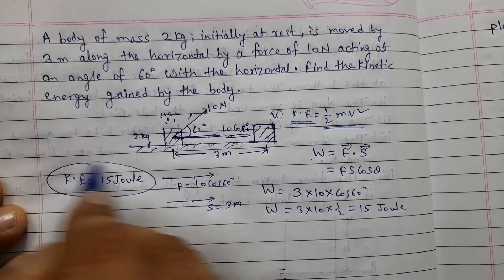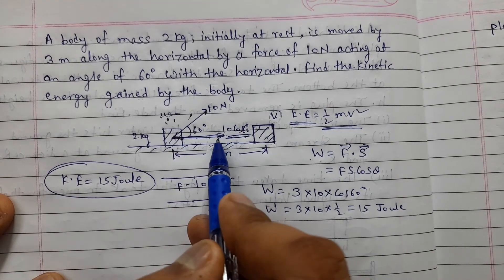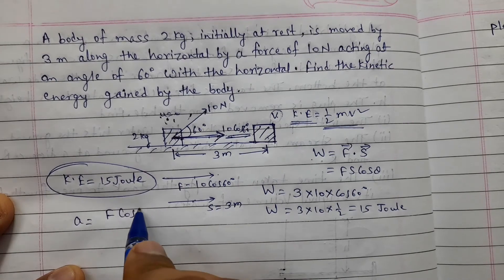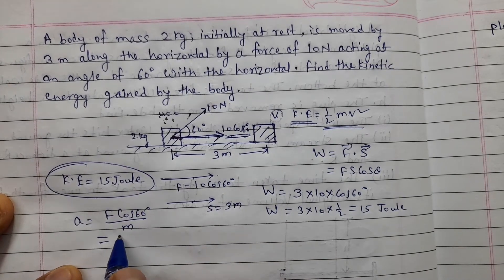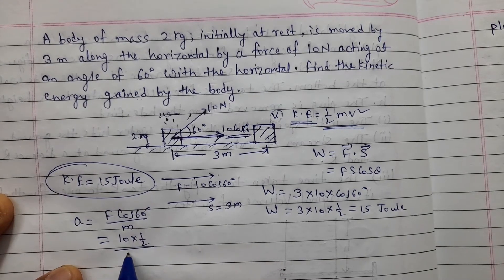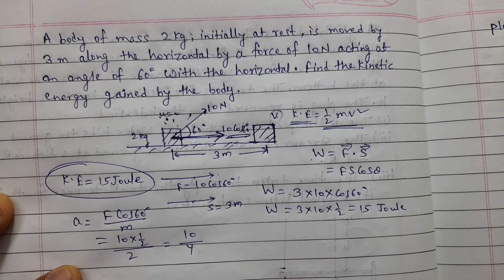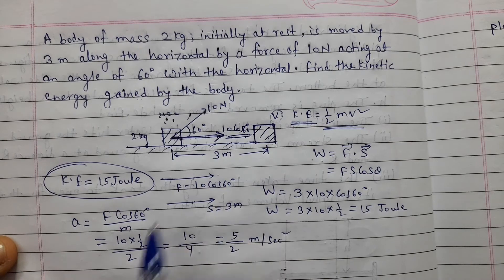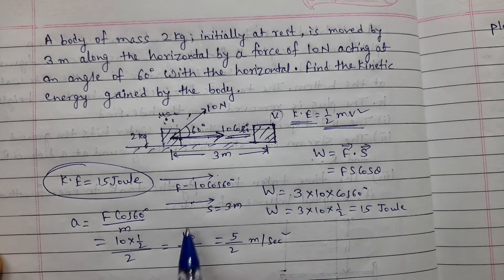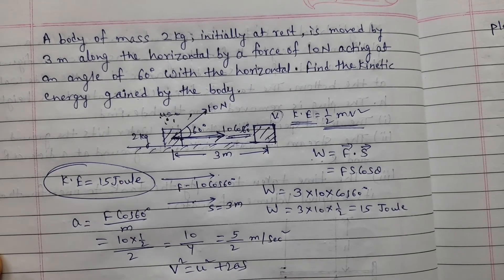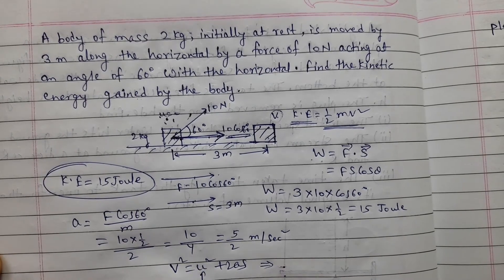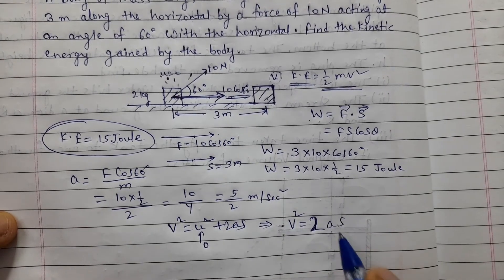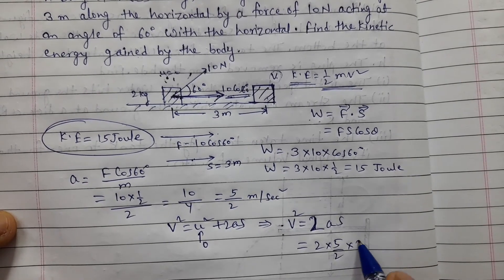You can find this answer as 15 joules, or if we calculate this direction, acceleration in the direction of force is F cos 60 degrees divided by mass, so 10 times half divided by 2 kg equals 5 by 2 meter per second squared. When it builds up over 3 meter displacement, v squared equals u squared plus 2aS. Initially u is 0, so v squared equals 2 times 5 by 2 times 3, which is 15.